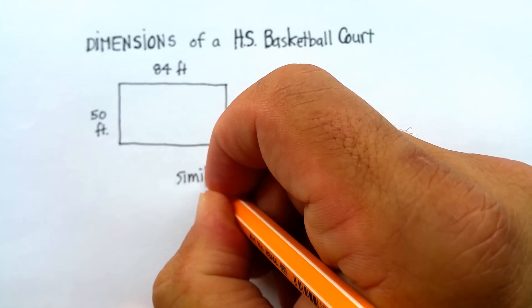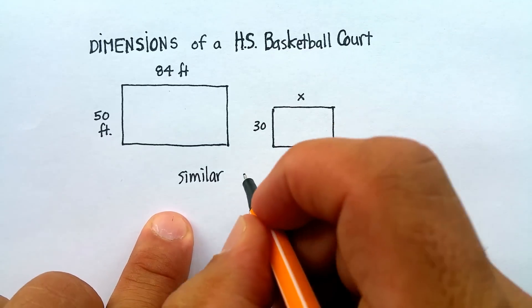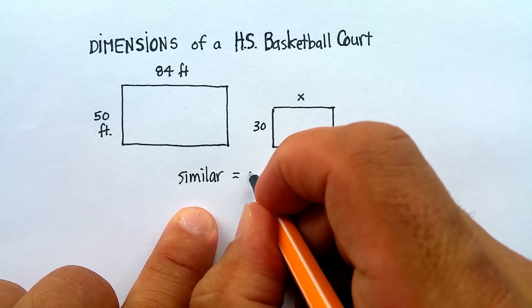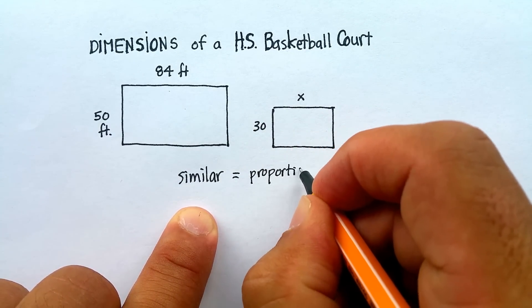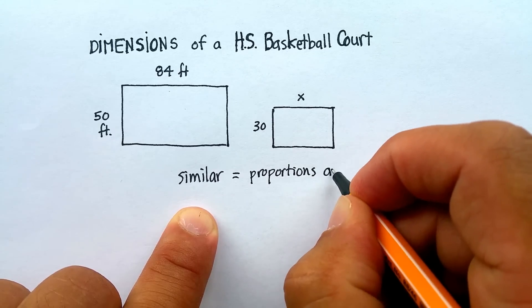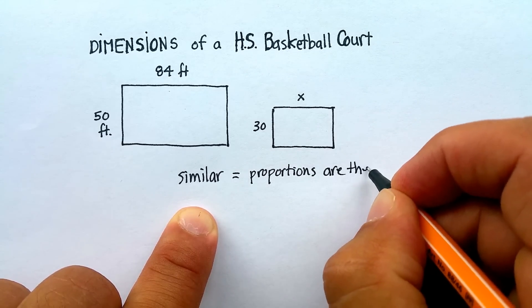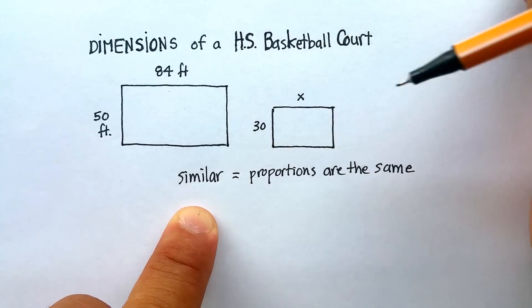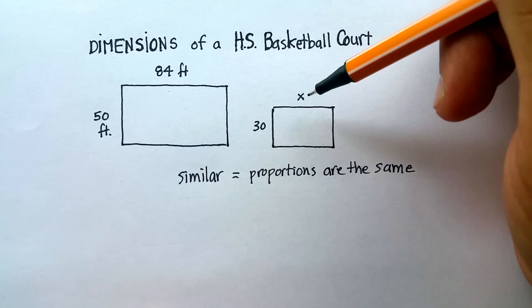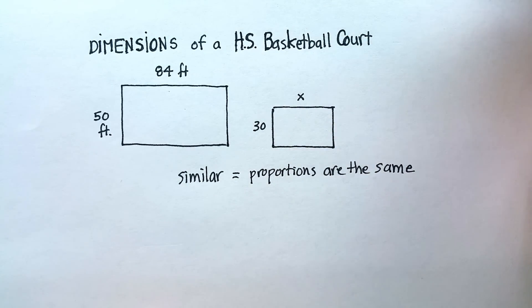That's what's called similar. When figures are similar, that means that their proportions are the same. Now, how would I write this? How would I go ahead and solve how long I would need to make this particular smaller basketball court?